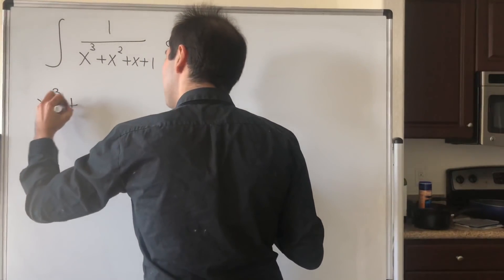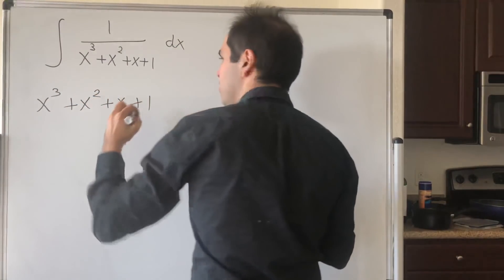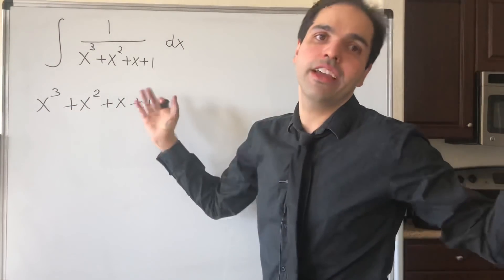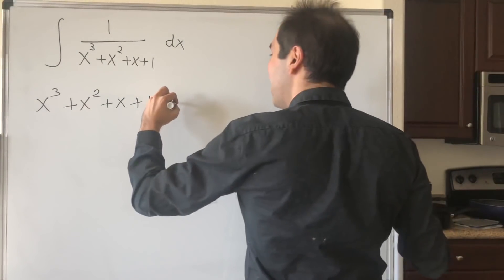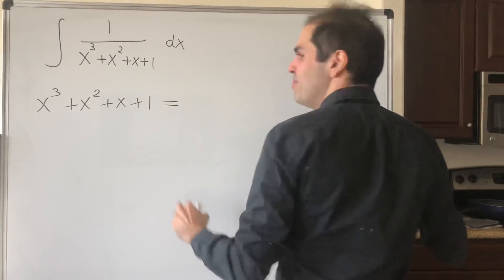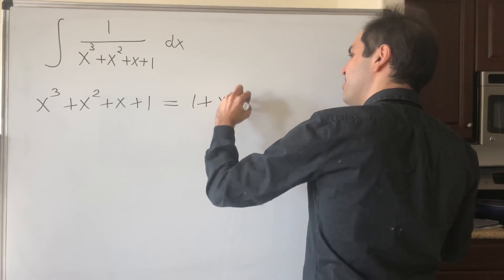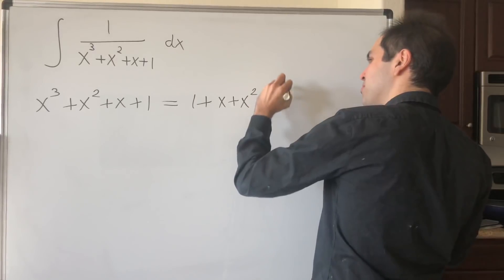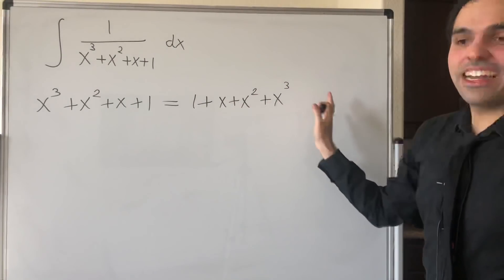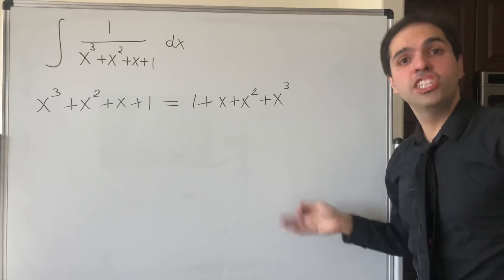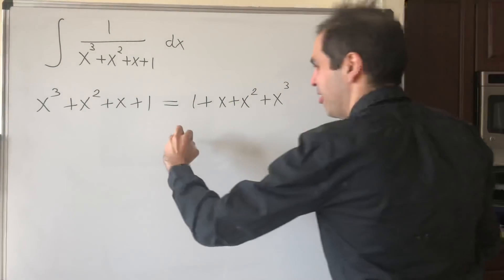So x cubed plus x squared plus x plus 1 — some people say you can factor out x plus 1 directly, but let me show you the swag way, because notice you can write this as 1 plus x plus x squared plus x cubed.